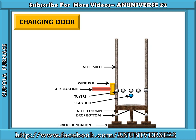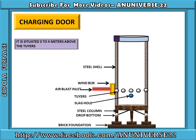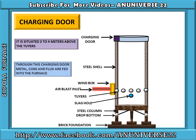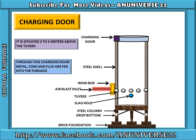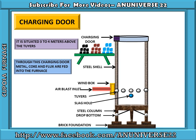Next part is charging door. It is situated 3 to 4 meters above the tuyeres. This is the charging door through which fuel, coke, and flux are fed into the furnace. These are metal, coke, and flux outside the cupola furnace, and through the charging door these are supplied to the combustion chamber of the cupola. The black color shows coke, pink color indicates flux, and blue color indicates metal.